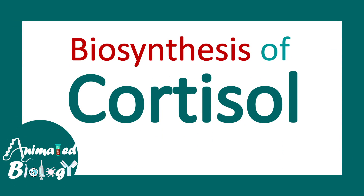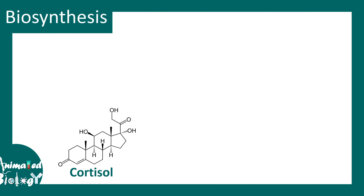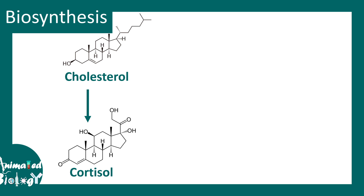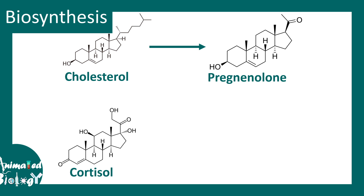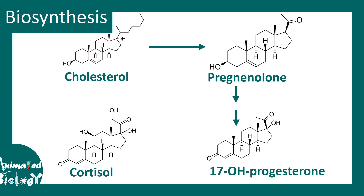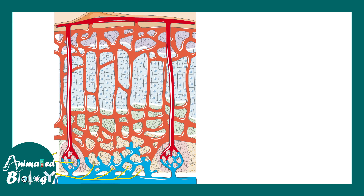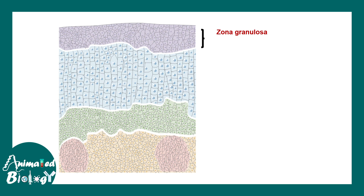Cortisol is a cholesterol derivative. The formation is not straightforward — cholesterol is converted to several derivatives such as pregnenolone, which eventually gets converted into 17-hydroxyprogesterone, and in subsequent steps it ultimately forms cortisol. In the adrenal cortex there are different layers: zona granulosa, zona fasciculata, and zona reticularis.